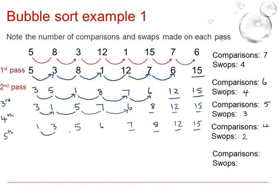Finally, we compare 1 and 3, no swap. 3 and 5, no swap. 5 and 6, no swap. Therefore, we have made 3 comparisons and no swaps. As soon as we have no swaps, that means we finish.